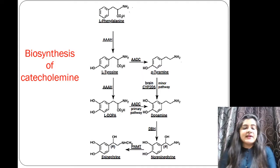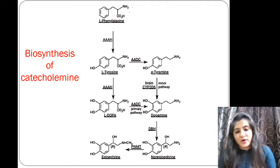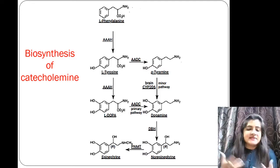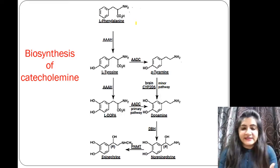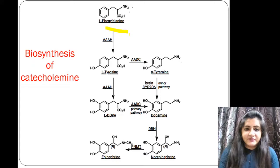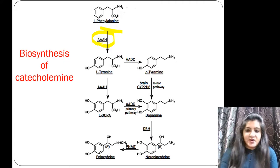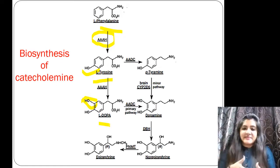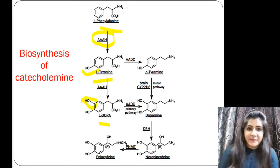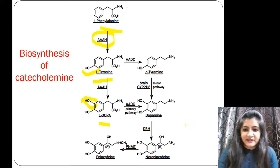Now we will see the biosynthesis of catecholamines: dopamine, epinephrine, and norepinephrine. First, from phenylalanine, with the help of the enzyme AAH (aromatic amino acid hydroxylase), we get an OH group added to form tyrosine. Then, with the help of the same enzyme, another OH group is added to form L-dopa.